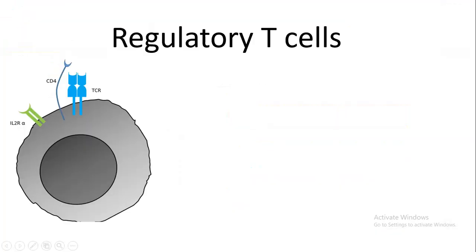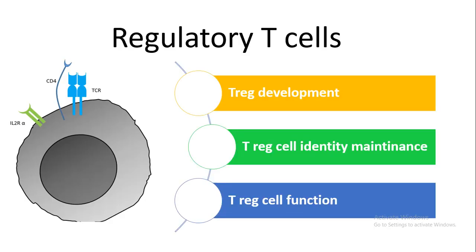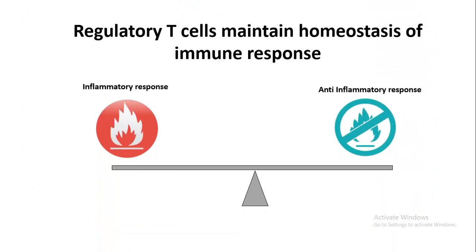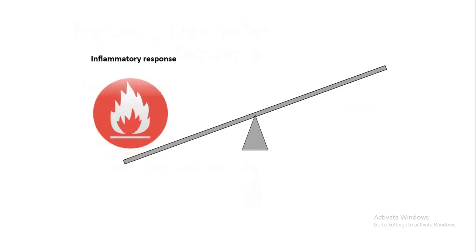In this video I will talk about regulatory T cells. Regulatory T cells are one of the cousins of CD4 positive T helper cells. I would first talk about T regulatory cell development, then how T regulatory cell identity and its maintenance happens, and then T regulatory cell function. T regulatory cells maintain the homeostasis of immune response — the balance between inflammatory and anti-inflammatory response — because they are the principal immune suppressor cell. In the absence of T regulatory cells, the balance tips over to an inflammatory response, increasing the chance of severe inflammation and autoimmune disorders.